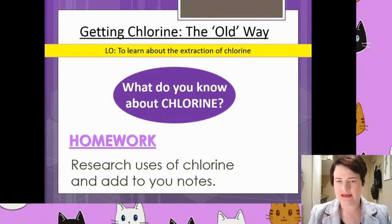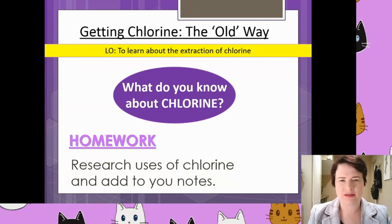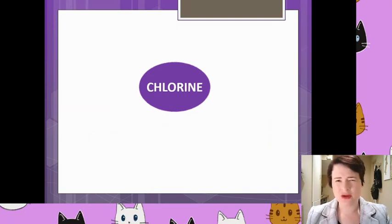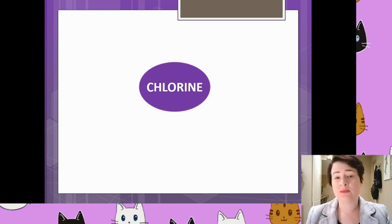There's a reason it's called the old way. Just like with the last few halogens, what we're going to do is start by thinking about what we actually know about them in the first place. So what do you already know about chlorine? What are its uses? What does it look like in aqueous or organic solutions? Has it got a high melting point or boiling point? What's its reactivity like?